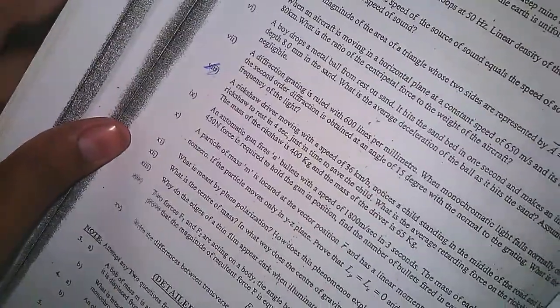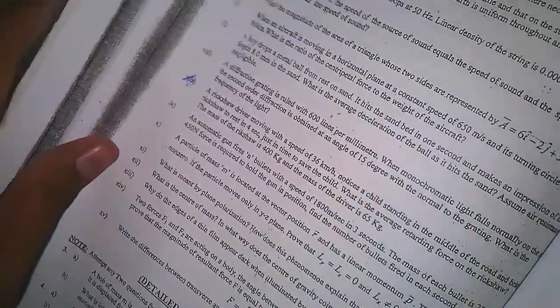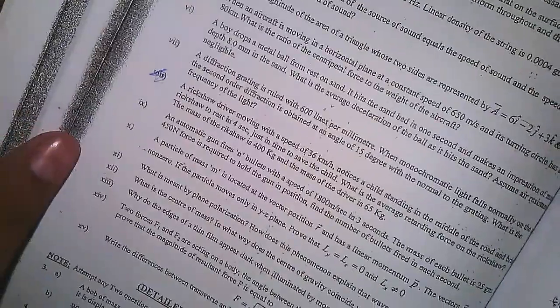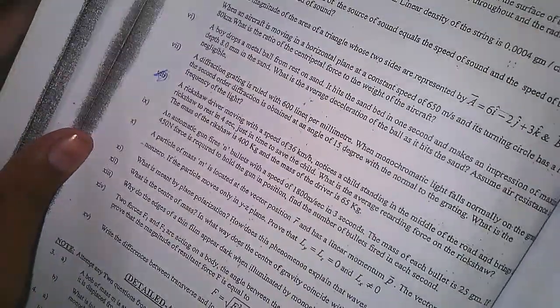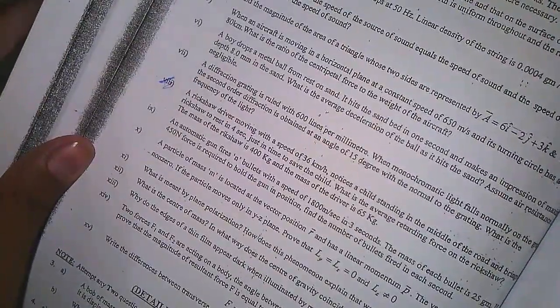I am going to read the numerical. A rickshaw driver moving with a speed of 36 km per hour notices a child standing in the middle of the road and brings his rickshaw to rest in 4 seconds.